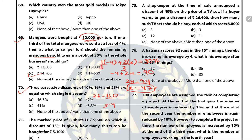Question 70: Successive discounts of 10%, 16%, and 25% are equivalent to a single discount of? The answer is D — 43.3%.